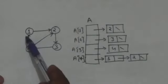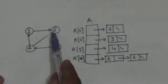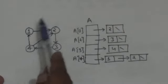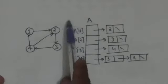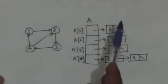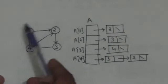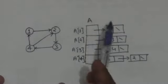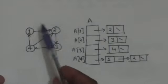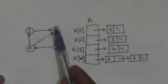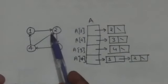See vertex 1 of this directed graph. Vertex 2 is adjacent to vertex 1. So A1, that is the first element of array A, represents a linked list which contains the vertices adjacent to vertex 1. This linked list will contain vertex 2 only, because only vertex 2 is adjacent to vertex 1.